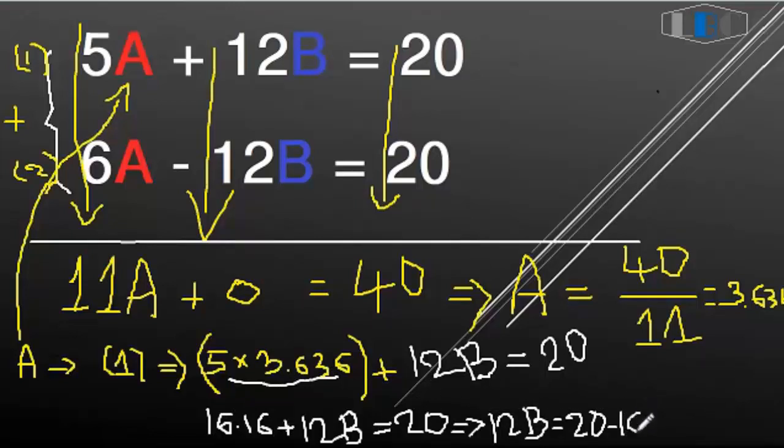So we calculate this first. 12B equals 4.16.